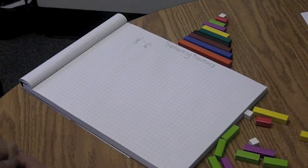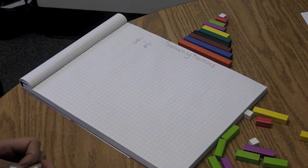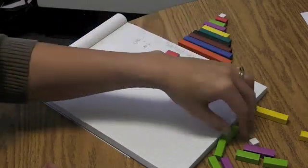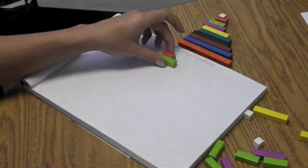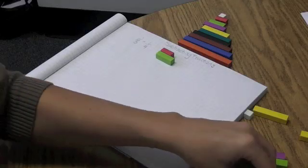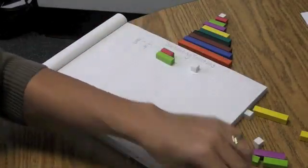So the first thing I'm going to do is build my fractions. So two-thirds would be a red over a light green, and one-quarter would be a white over a purple.